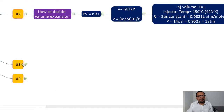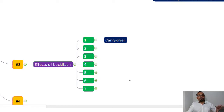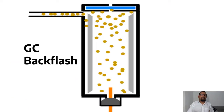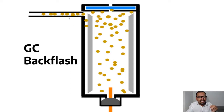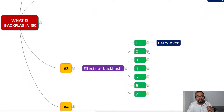Let us understand the effects of back flash — there are seven different effects to discuss. The first is carryover. When the sample accumulates in the carrier gas inlet line — a low-temperature area — it condenses there. When you inject the next blank injection, this condensed sample re-enters the injector port and column, producing a response even from a blank injection. This is carryover caused by back flash.